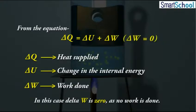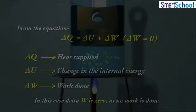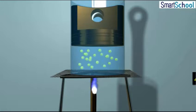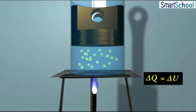Since in the isochoric process, delta W is zero, as no work is done, hence the equation becomes delta Q is equal to delta U.